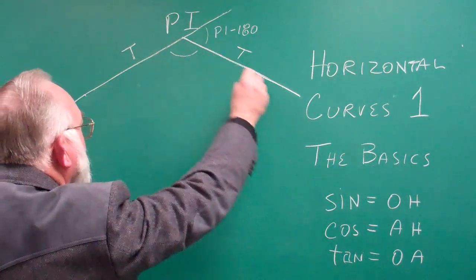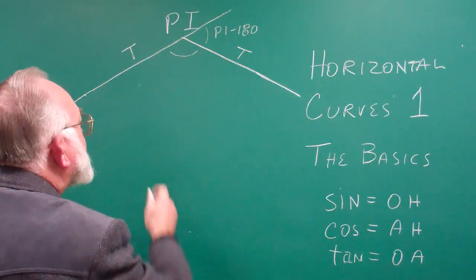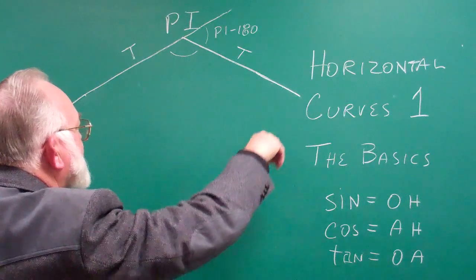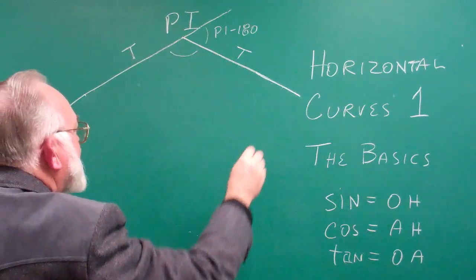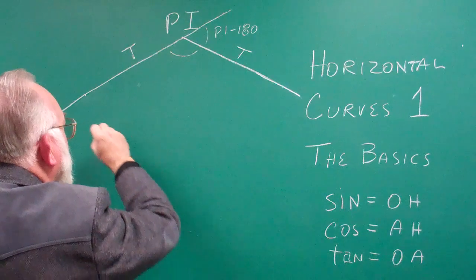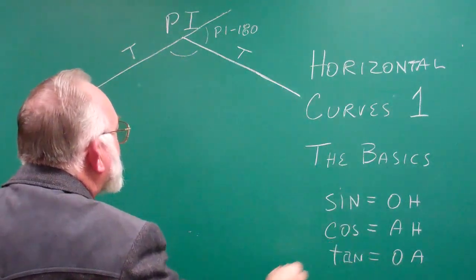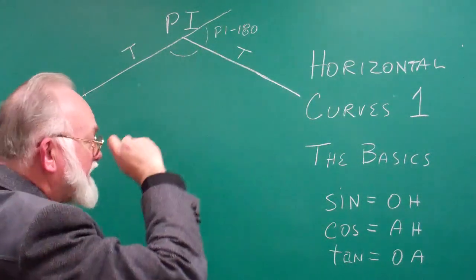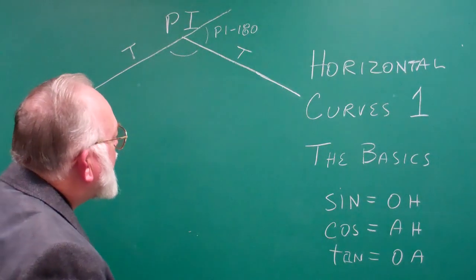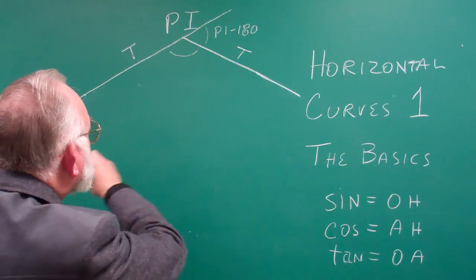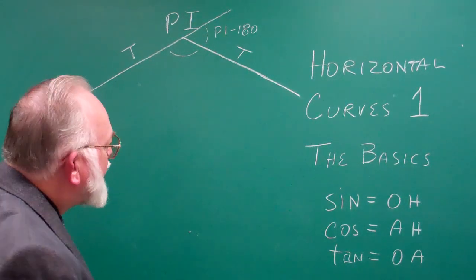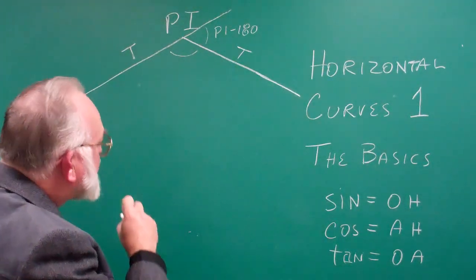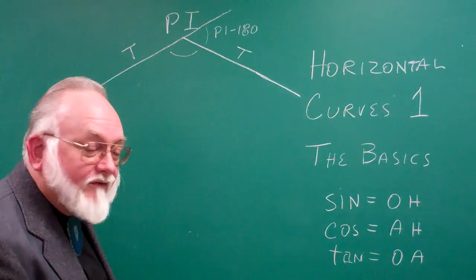When you have two tangents, two bearings intersecting, doesn't matter what size the circle is, there's going to be a circle that wedges up into there, and that will be the curve. The radius of the curve, the size of the circle, is going to be determined by some other factor. Usually it's the speed of the vehicle going on that road, how fast it's going, and how big the curve needs to be so that the car or truck doesn't run off the side of the road.